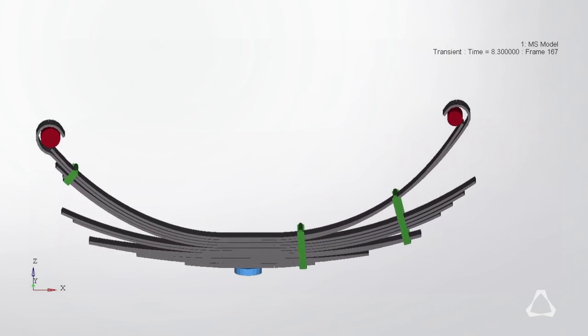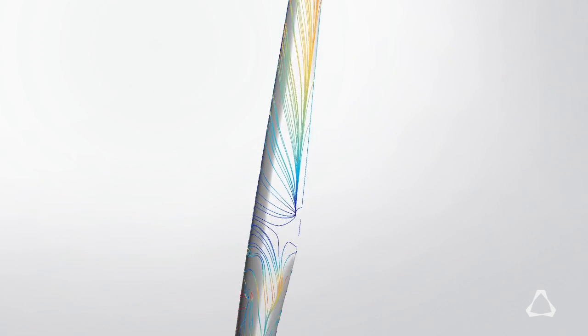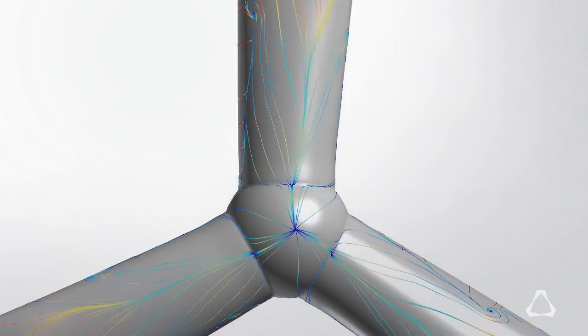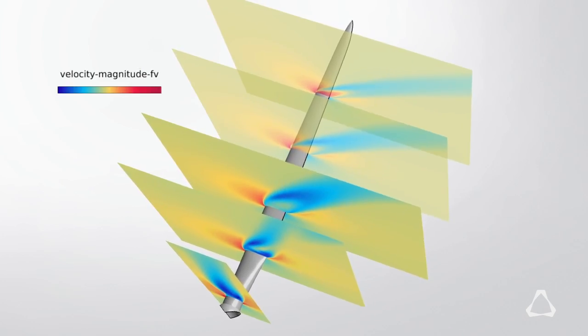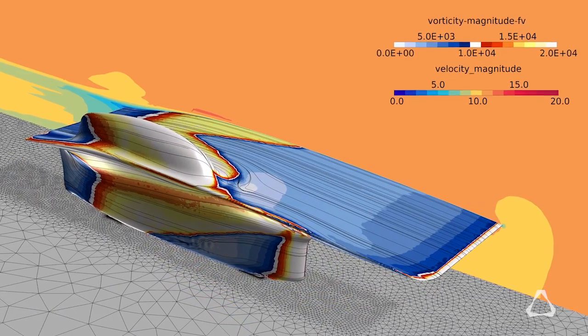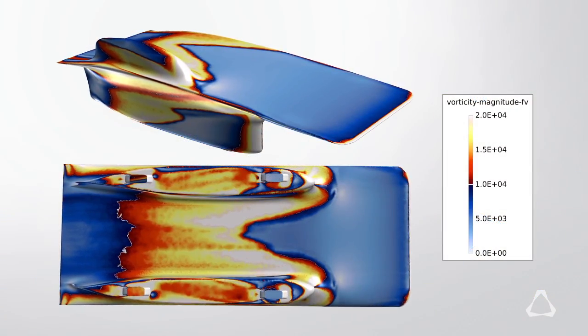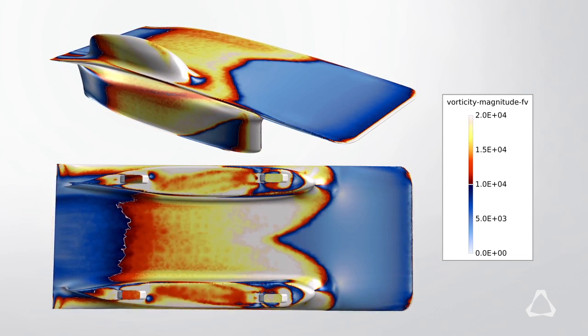So this is on the structural solver side. On the AcuSolve side, we actually added a complete portfolio of turbulence and transition models that really helps us to solve problems in wind turbines and automotive industry much more accurately, and with a bigger set of physics simulation.